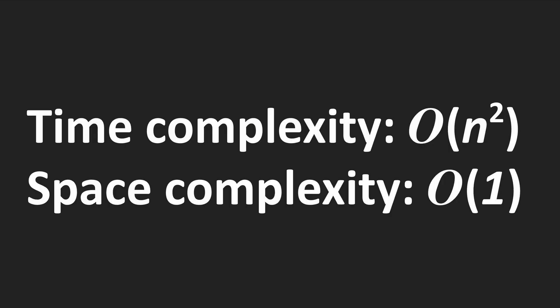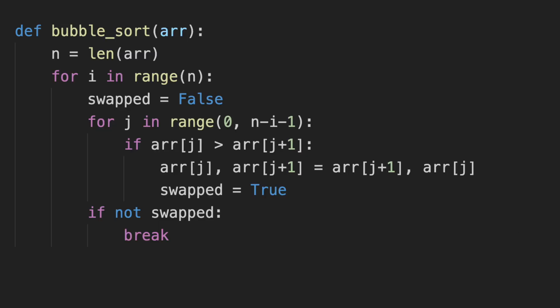So what's the time complexity of bubble sort? The time complexity is O(n²) for the worst case scenario. For the best case scenario, it's O(n), and for the average, it's also O(n²). How about the space complexity? Space complexity is constant, because we are not using any extra space.